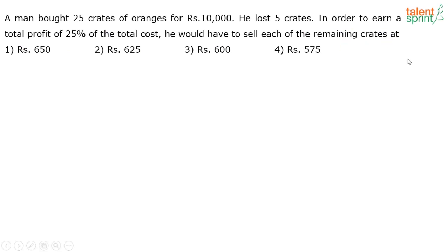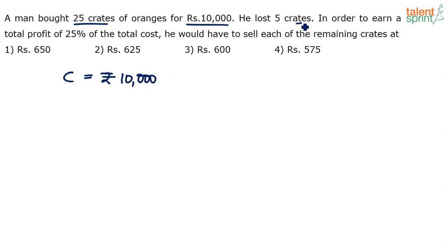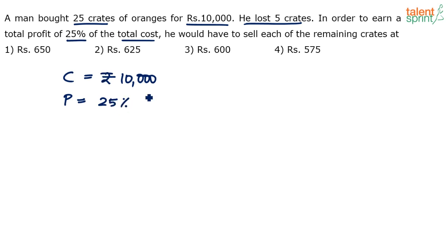This is a simple question from profit and loss. He bought 25 crates for rupees 10,000, so the total cost price is rupees 10,000. He lost five crates, which means he is left with only 20 of them. In order to earn a profit of 25% of the total cost — 25% of 10,000 — that is rupees 2,500.